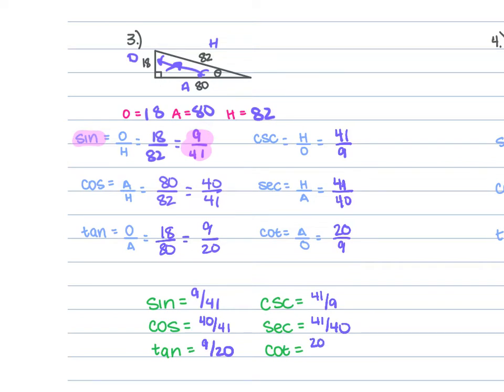I keep writing 20 — this is not a 20, it's a 40. So this is 40, this is 40. The cosine simplifies to 40 over 41.